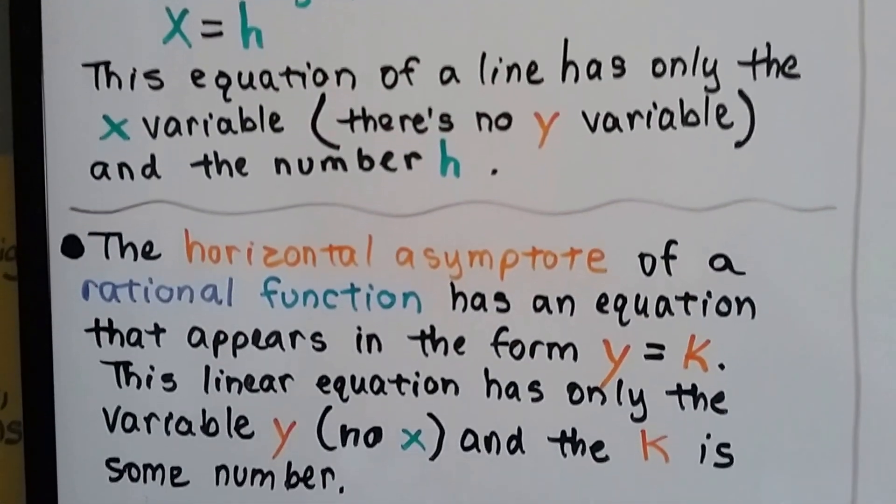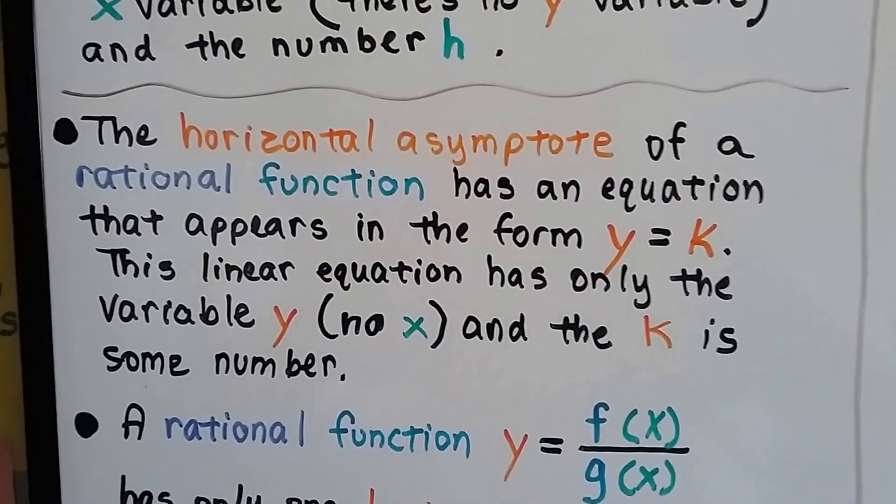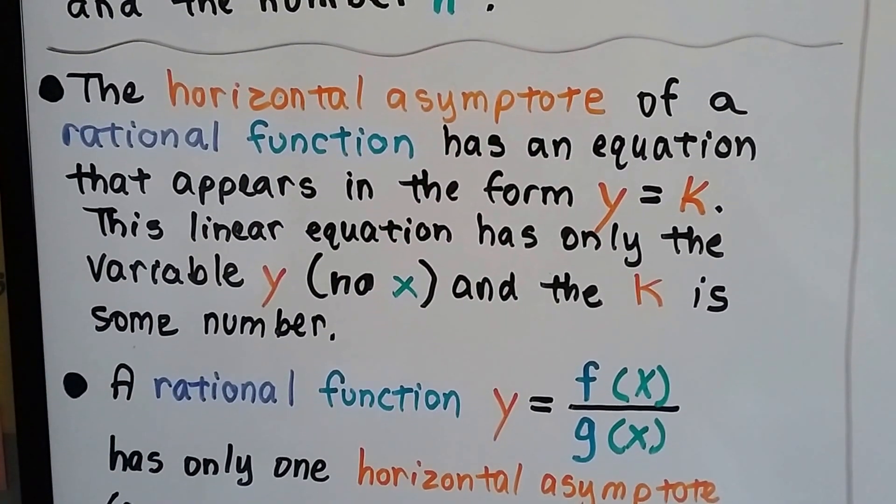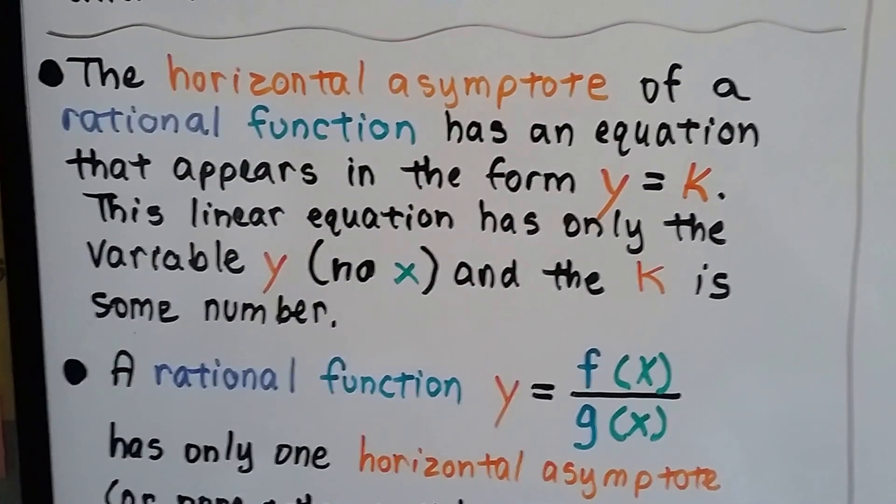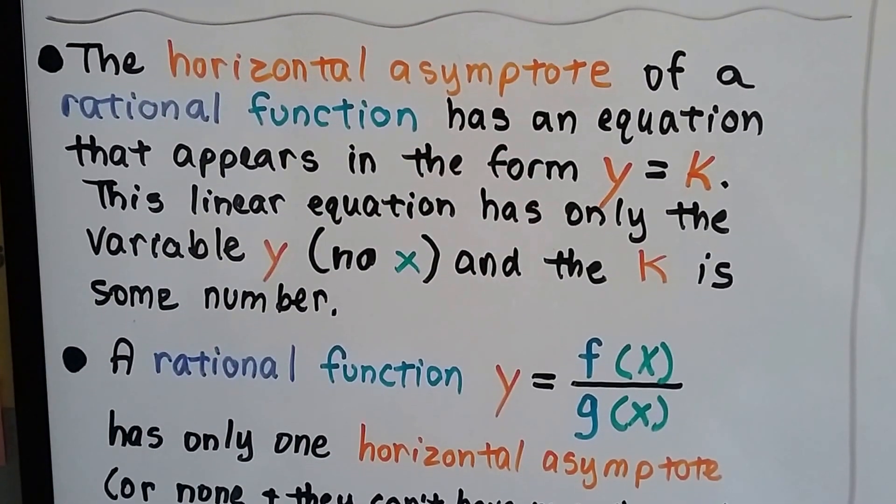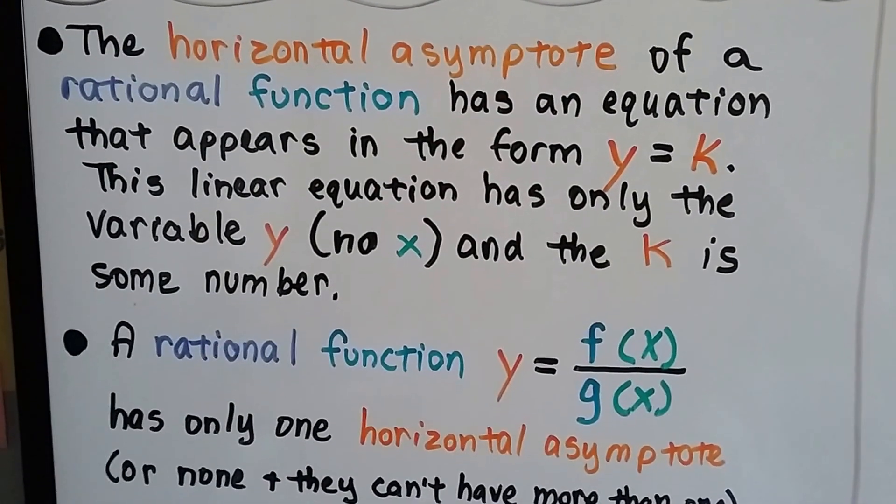The horizontal asymptote of a rational function has an equation that appears in the form y equals k. This linear equation has only the variable y, no x. It's the other way around, and the k is some number.